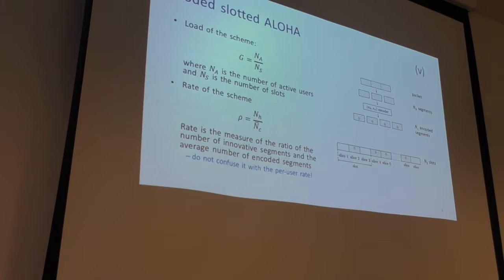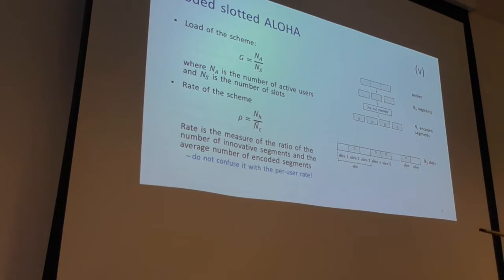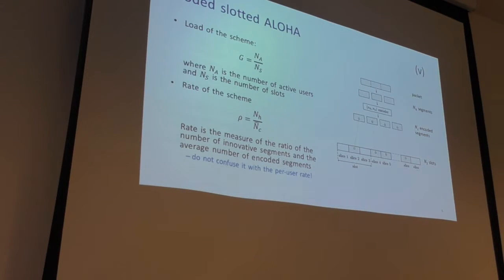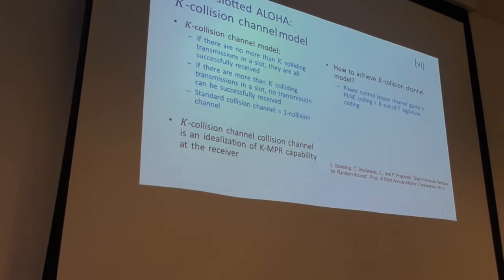These encoded mini-packets are sometimes called slices. The number of slots is kept consistent with what you would use when sending replicas, to keep things comparable.